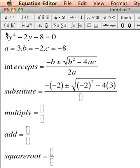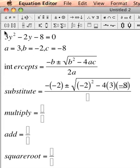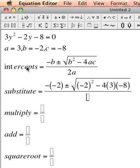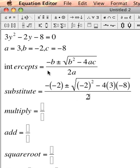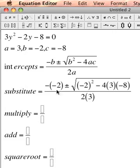So inside the parentheses I'm going to write 3, and c I'm going to replace with negative 8. In my denominator, I have 2, that's not going to change, and I'm going to replace a with 3.